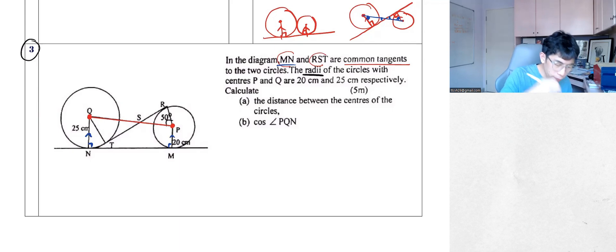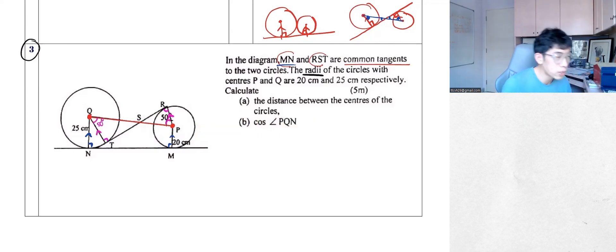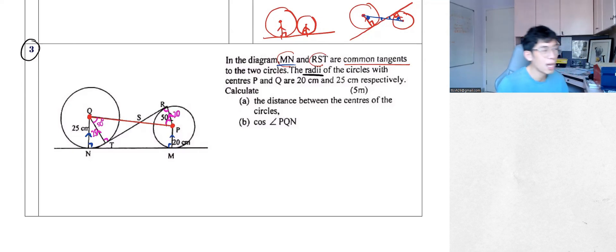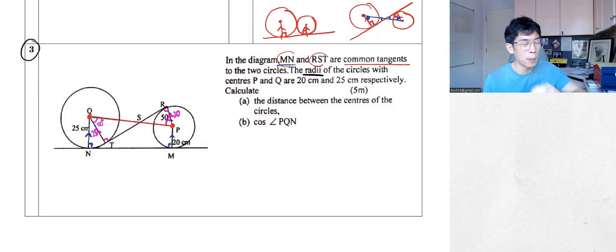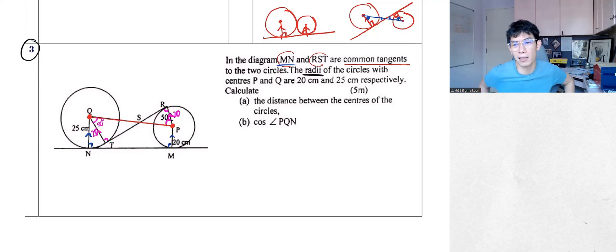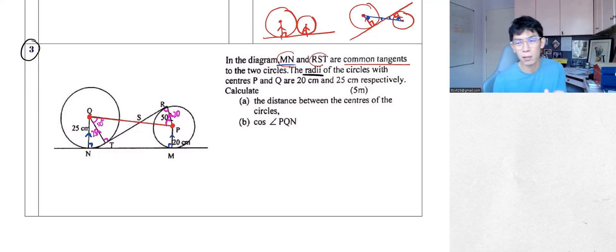MN has 90 and 90 — parallel. And there's another one RST — 90 and 90, also parallel. So you can transfer the 50 degrees across. Simultaneously, notice there is a 20 cm radius and a 25 cm radius. So when you see a right angle triangle, with a non-90 acute angle like 50 degrees, and you have a length — what chapter links to right angle triangles, acute angles, and lengths for calculation?